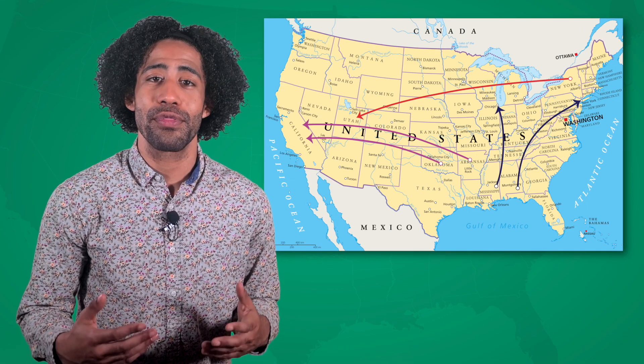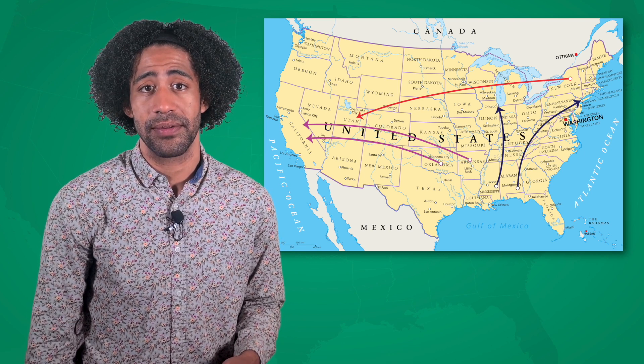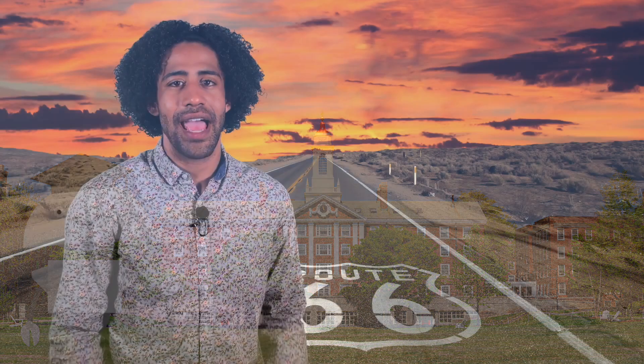We've explored three historical instances of internal migration in the United States, each with its unique push and pull factors. Remember the scenario we started with, considering moving for school? Just like you, each group we examined had to weigh their own push and pull factors before making the decision to move. As we've seen, the movement of people isn't just about geography — it's also about fleeing economic hardship and persecution in pursuit of better opportunities, safety, and cultural expression.